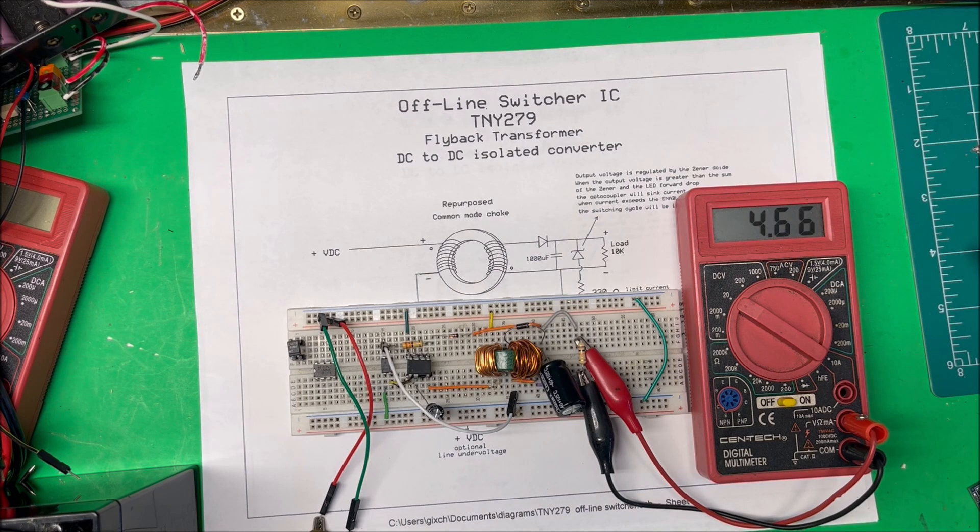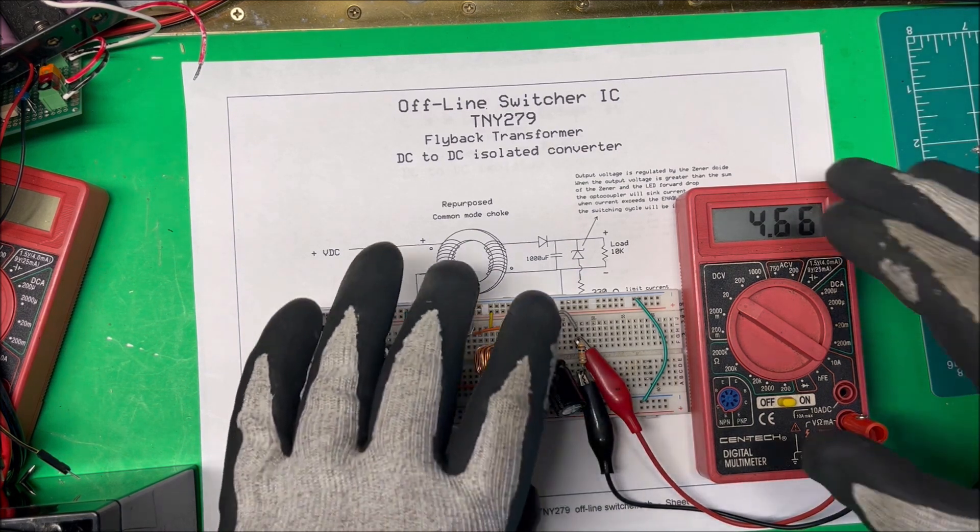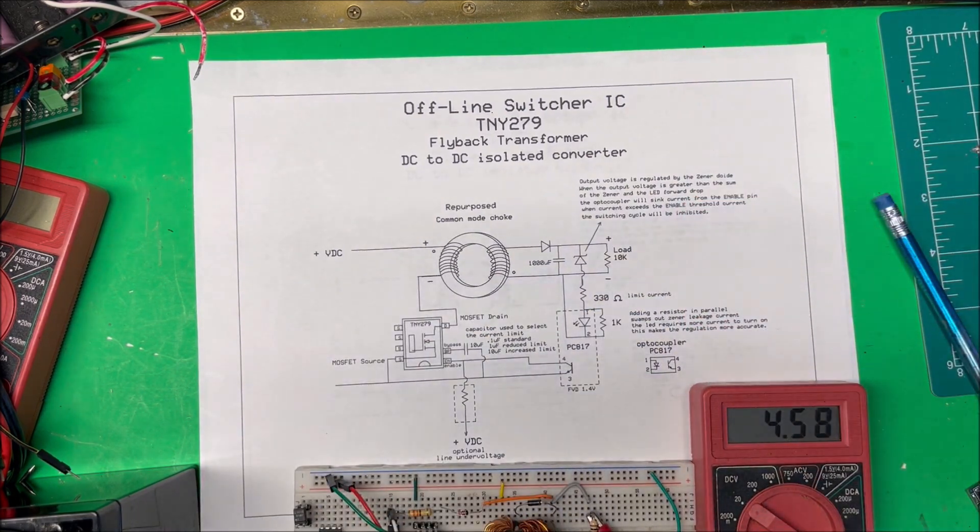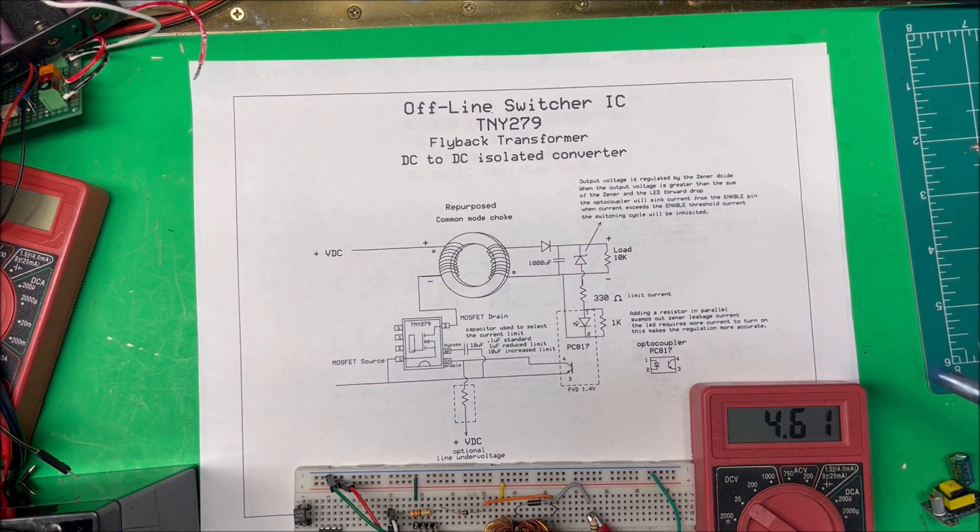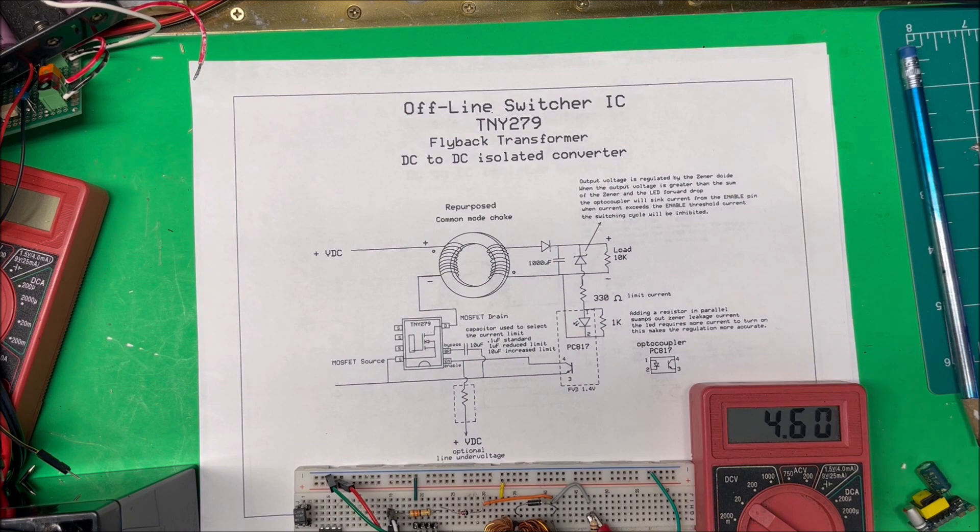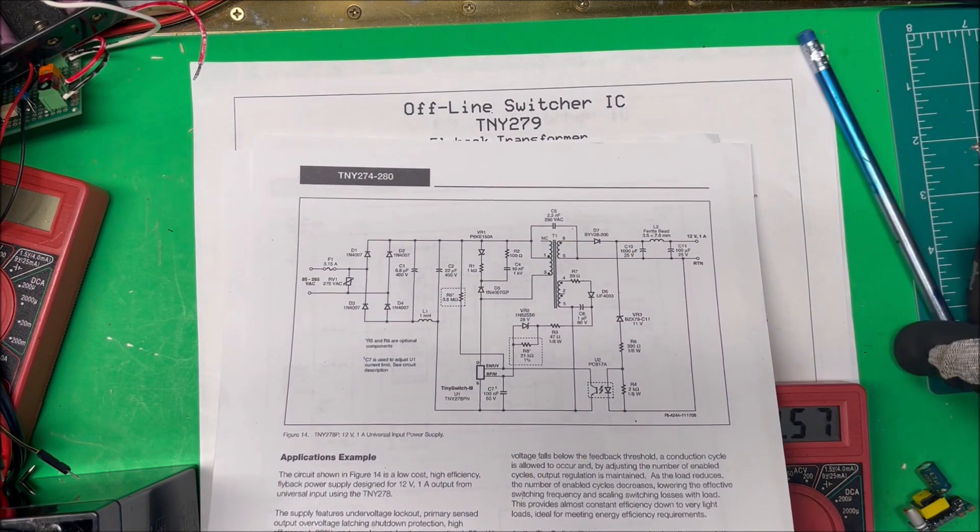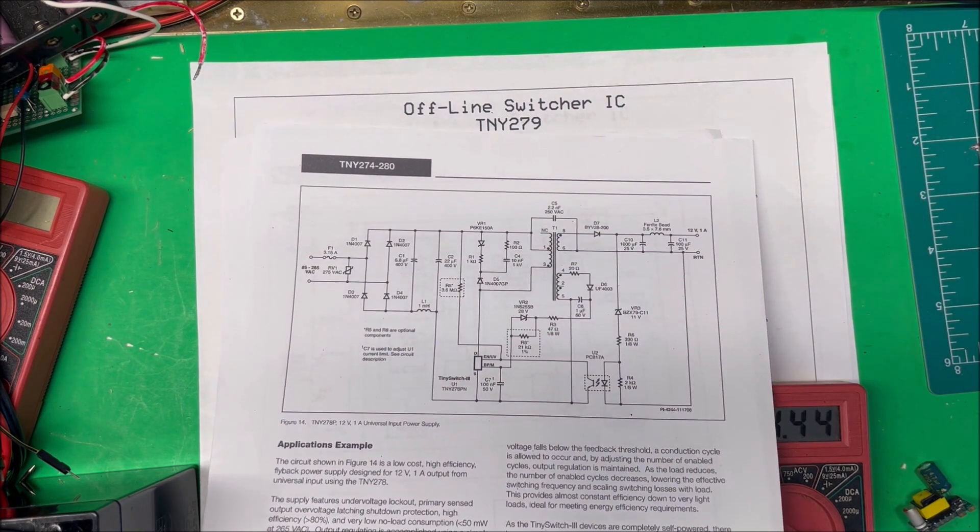I got 4.66 volts on there and it seems to be working just fine. This circuit's not practical to use for anything - just to experiment to see if we can hook that chip up. Here's another diagram in the data sheet - a better way to do it and more accurate.